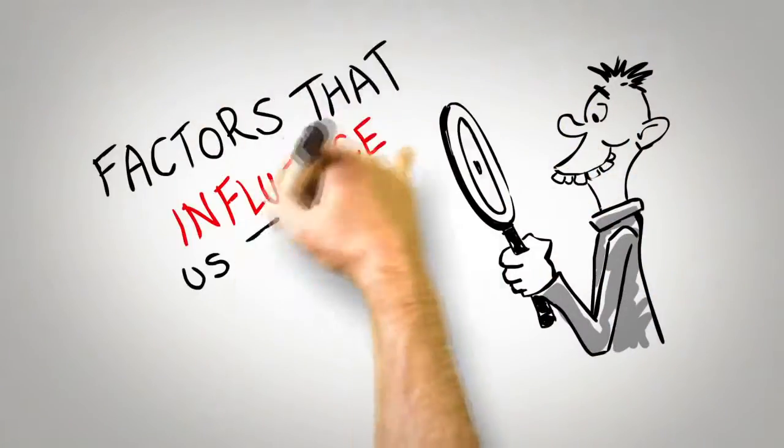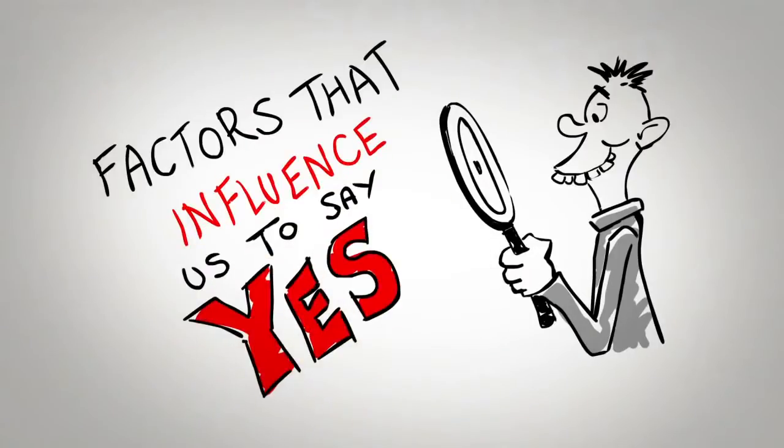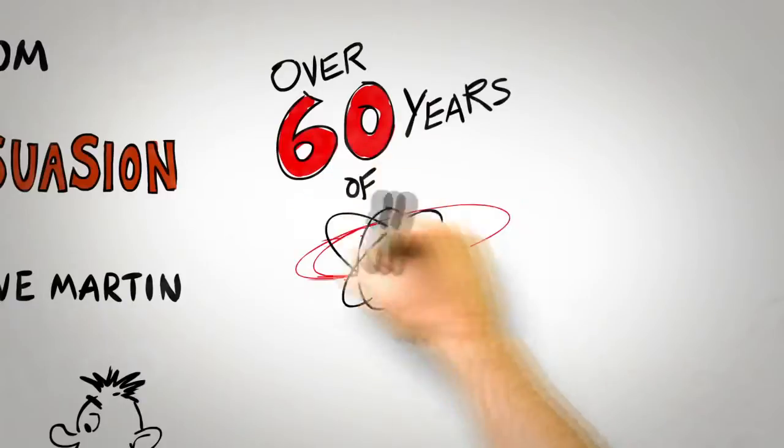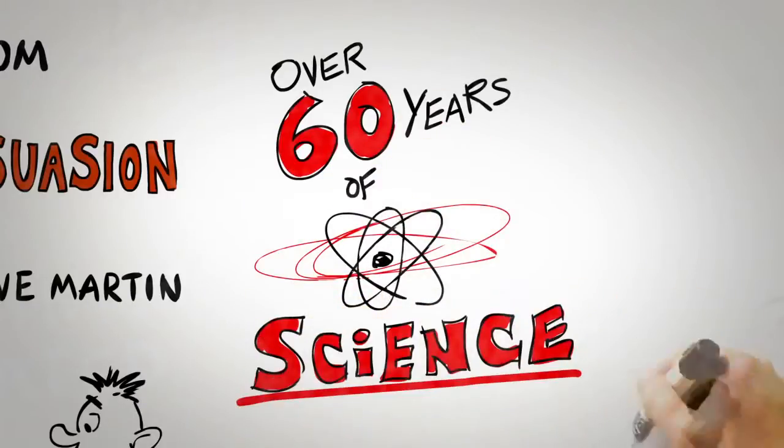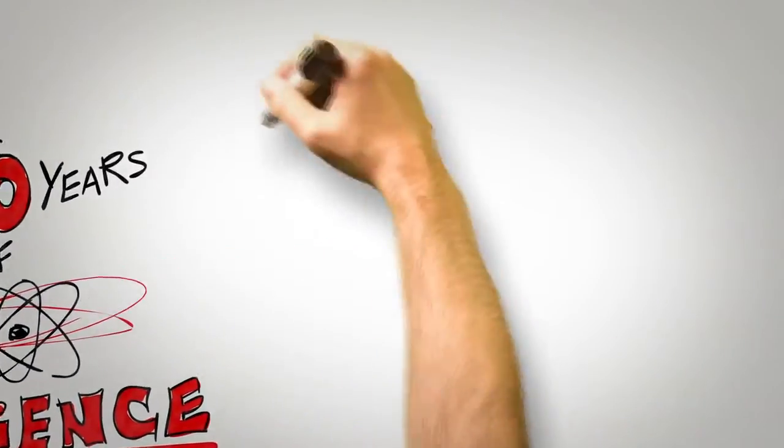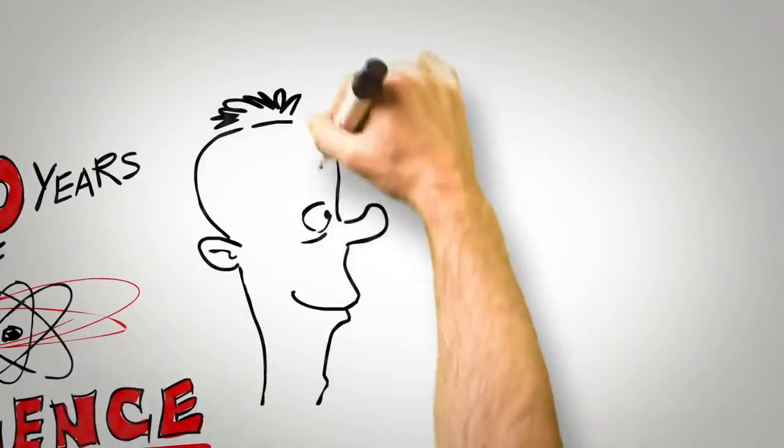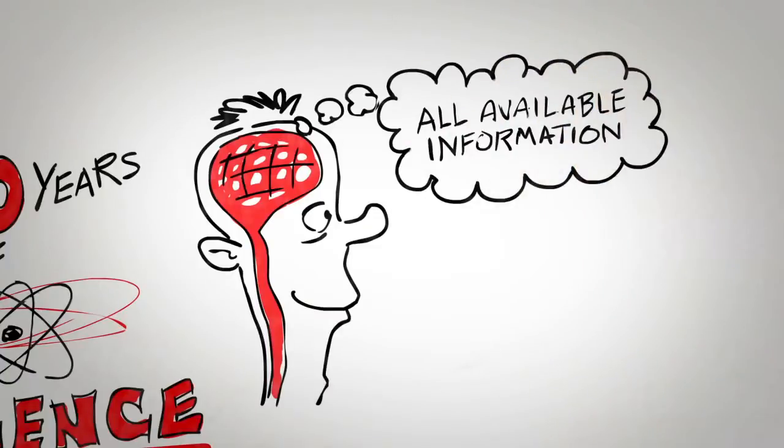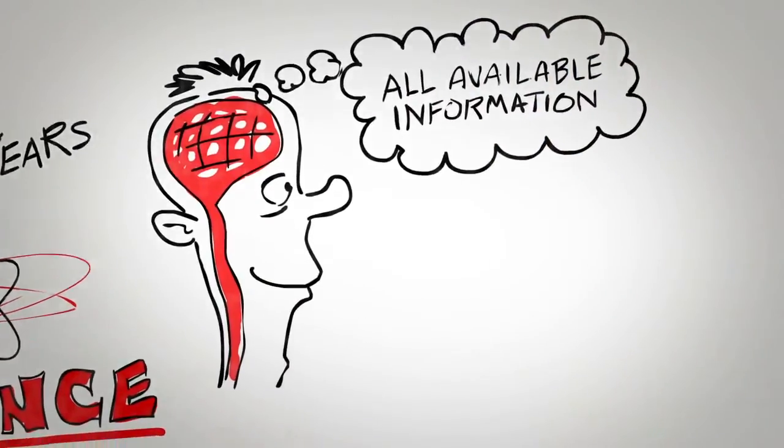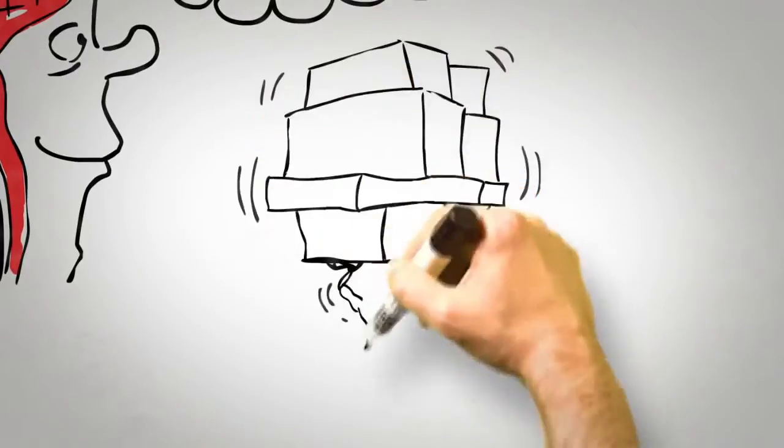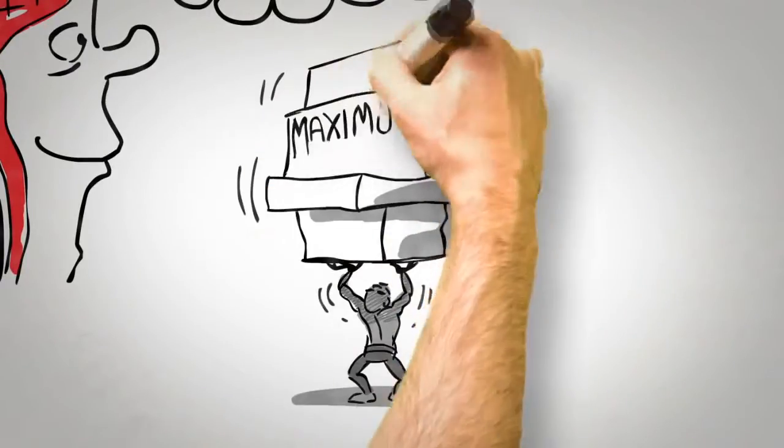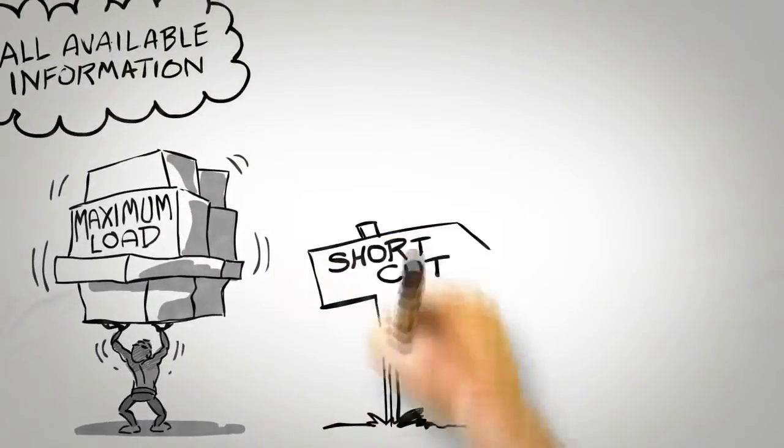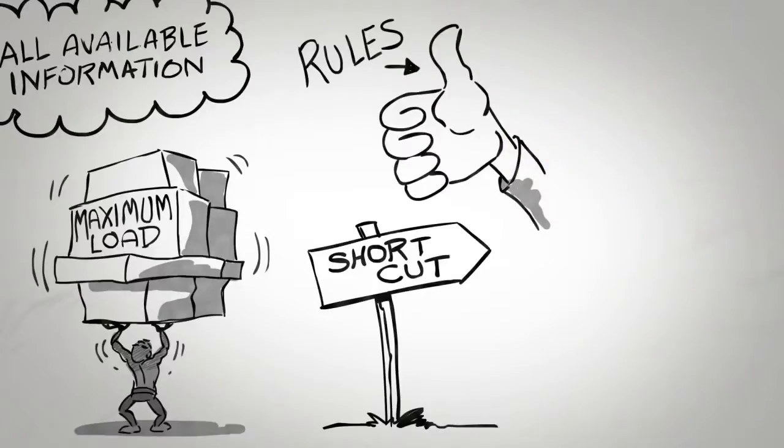Researchers have been studying the factors that influence us to say yes to the requests of others for over 60 years. There can be no doubt that there's a science to how we are persuaded, and a lot of this science is surprising. When making a decision, it would be nice to think that people consider all the available information, but the reality is very often different. In the increasingly overloaded lives we lead, more than ever, we need shortcuts or rules of thumb to guide our decision making.